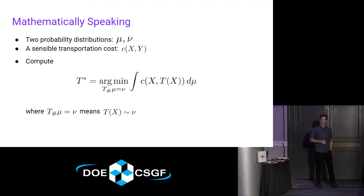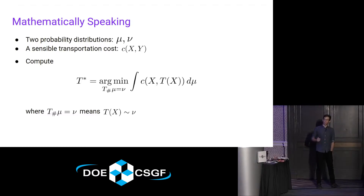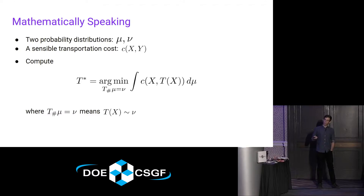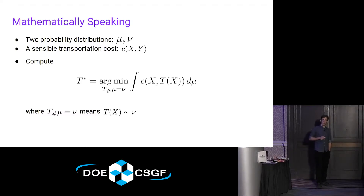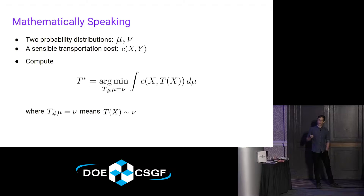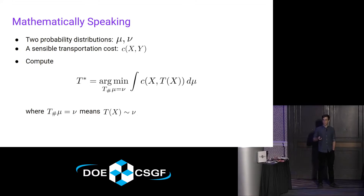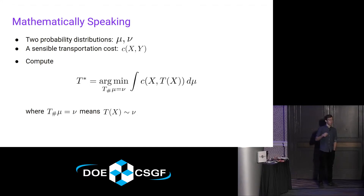Mathematically speaking, you assume you have two probability distributions — with some technical regularity assumptions, but essentially almost any probability distribution you'd want to consider. You have a sensible transportation cost, meaning it's lower semi-continuous. And then you want to compute the optimal map from x to y that minimizes this integral, minimizes the average cost. The key constraint that makes this problem non-trivial is that the push-forward of mu under this map has to be equal to the distribution nu.